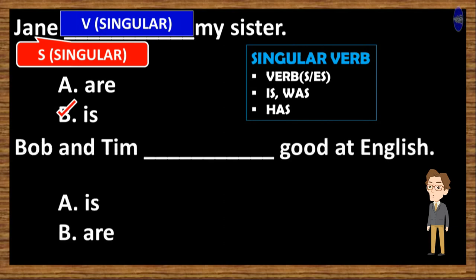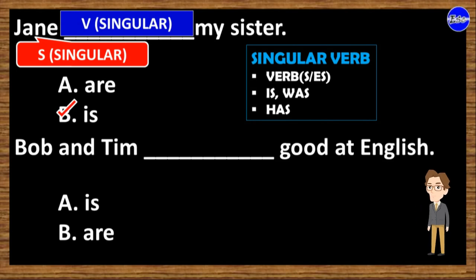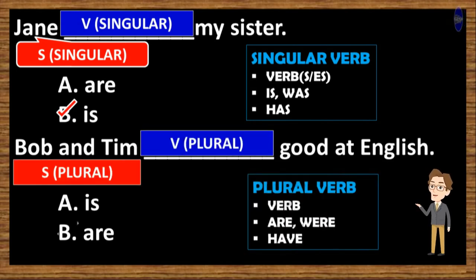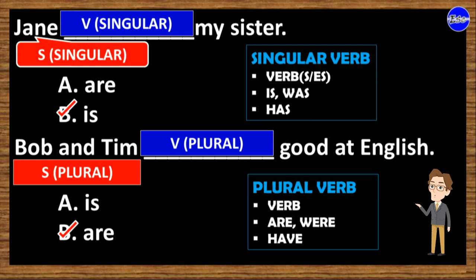Bob and Tim ___ good at English. A, is. And B, are. The subject is Bob and Tim — there are two persons, so it is plural. Then we have to use plural verb too, and the answer is option B — are.